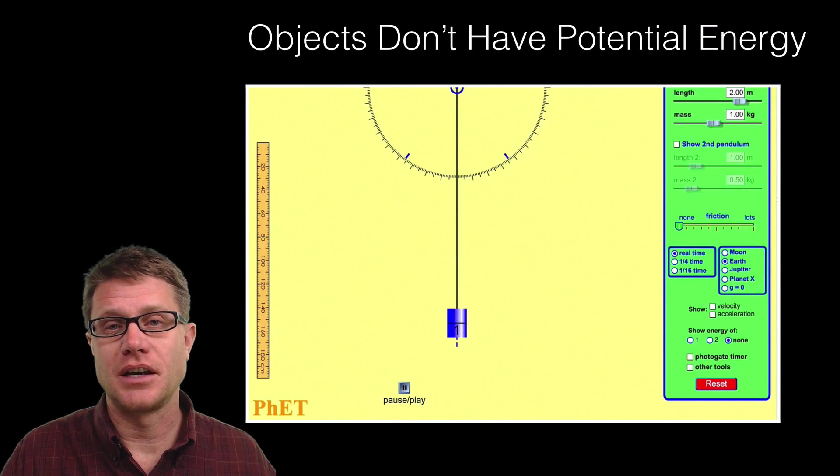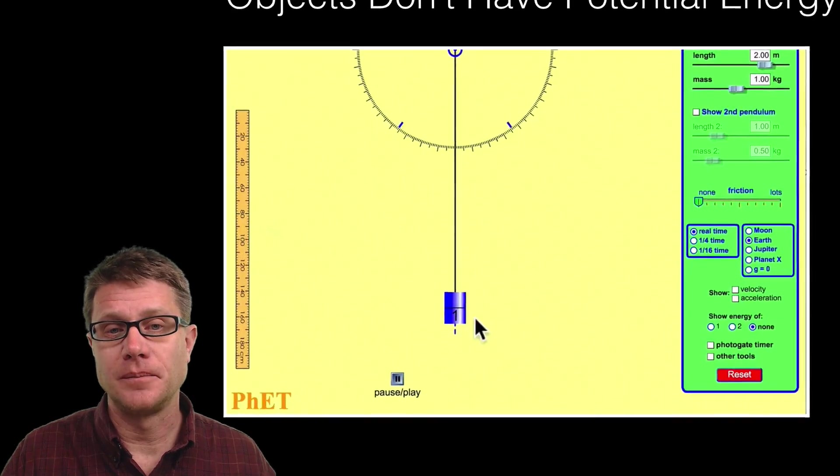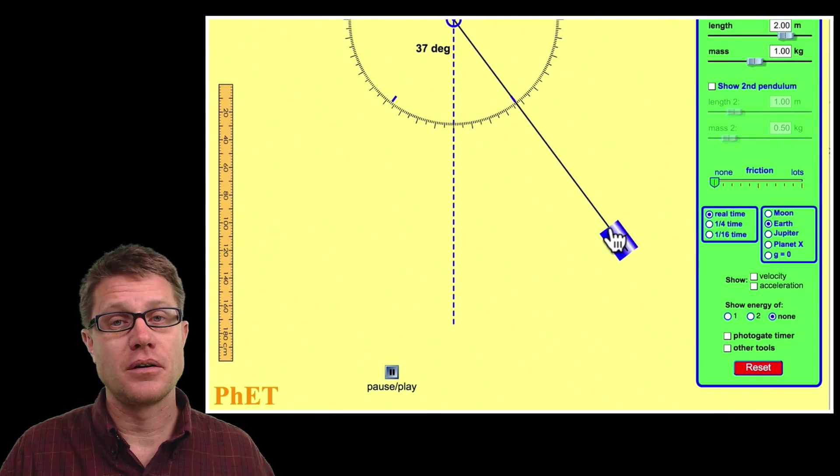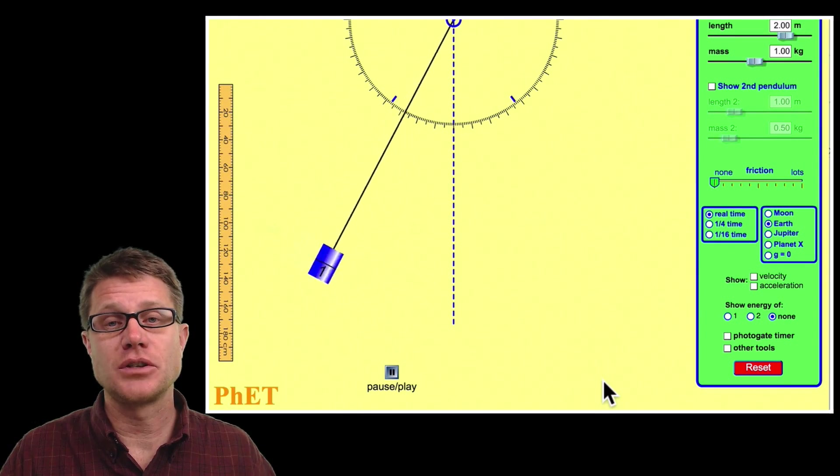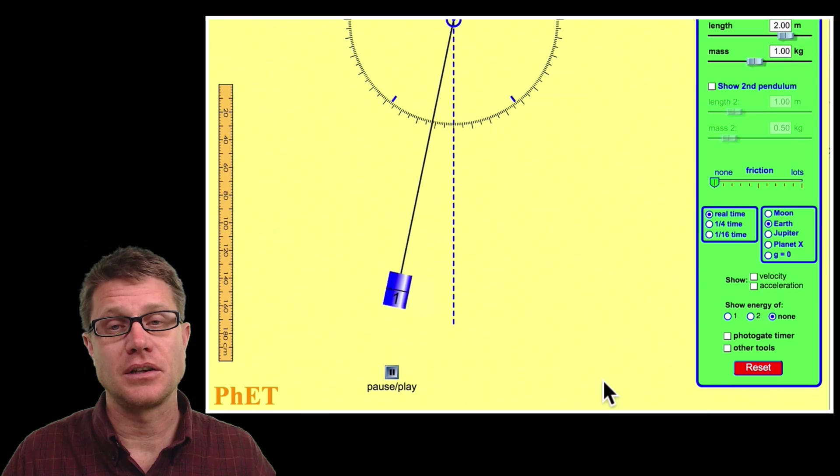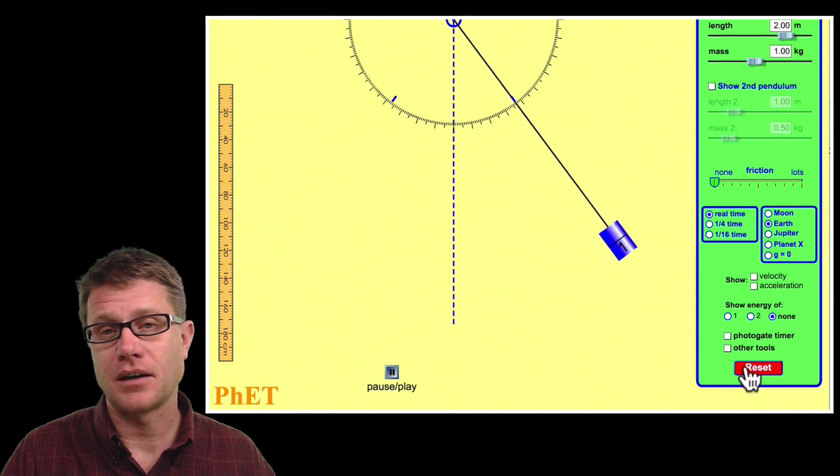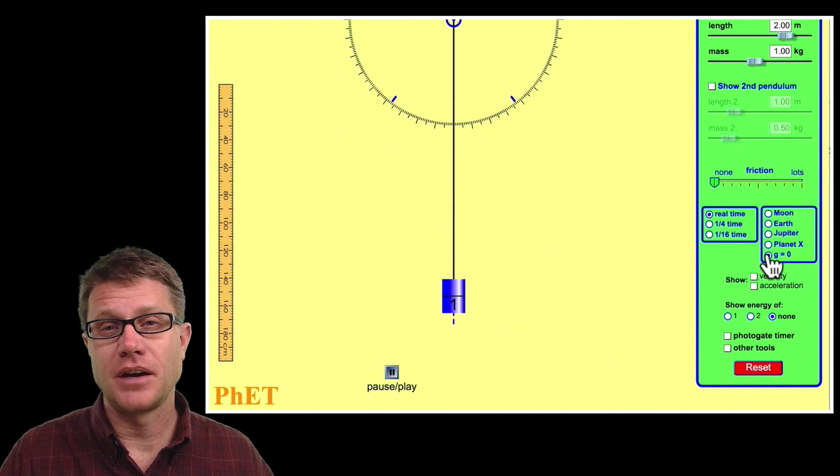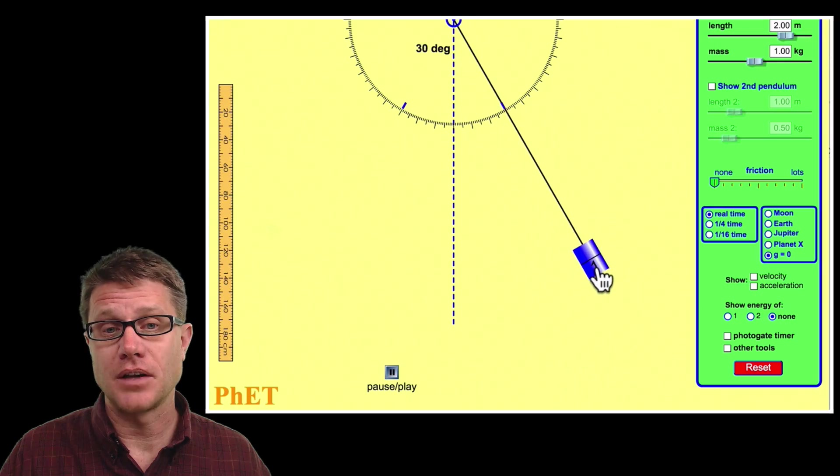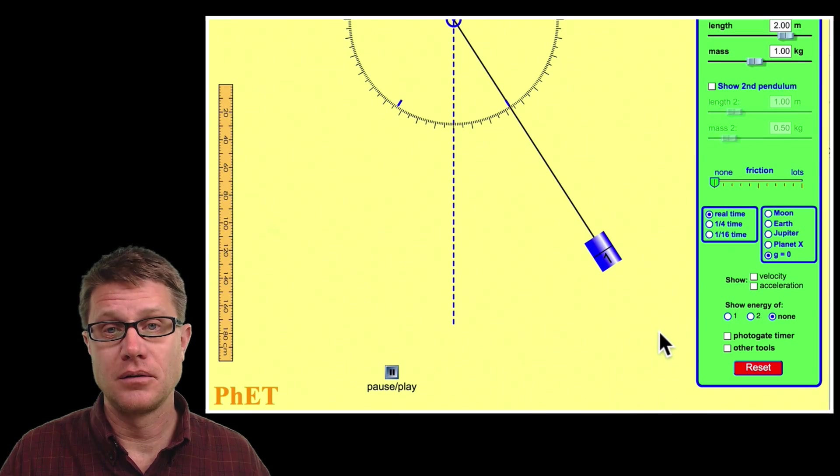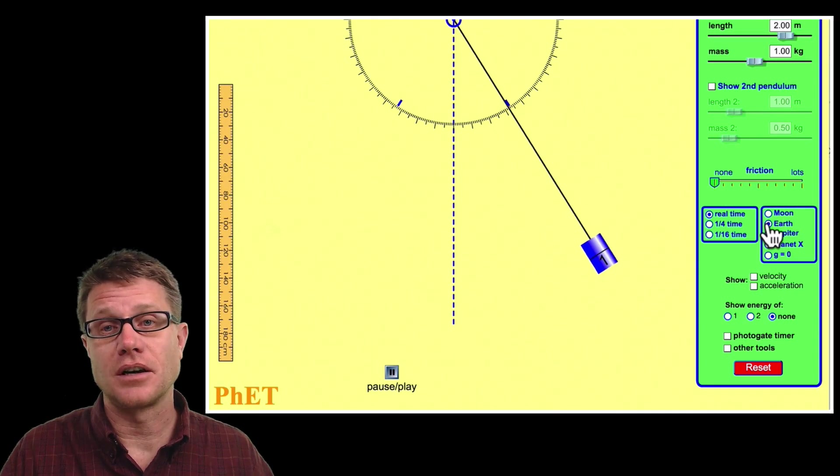And let me use a little PhET simulation to get at that. So if we take a pendulum and we lift it up on the earth it is going to have potential energy which becomes kinetic and then becomes potential energy again. It is going to oscillate back and forth. But watch what happens if I get rid of the earth. Now there is no gravity and I simply let it go. Well that object is going to stay there. It has no potential energy. There is no stored energy because it is a single object.